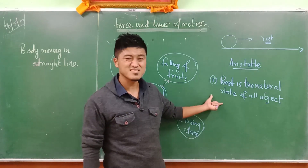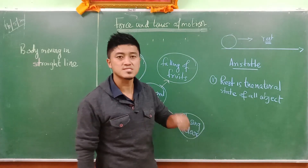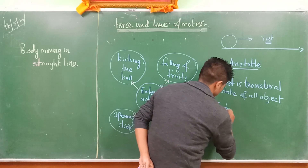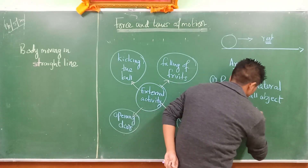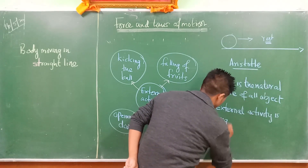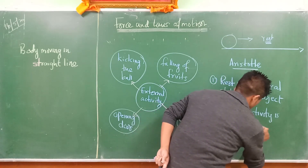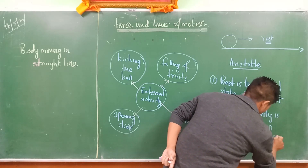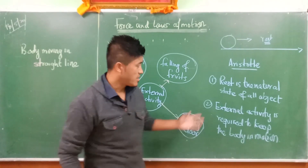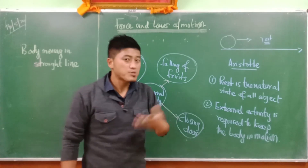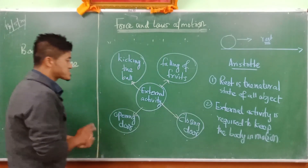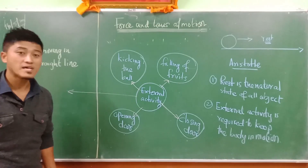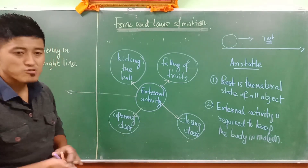This may seem simple but it was a significant conclusion made by Aristotle. Secondly, what he said was: in order for an object to move, there should be application of some external activity. And this external activity is what we call force. So with this we are going to start the chapter Force and Laws of Motion.